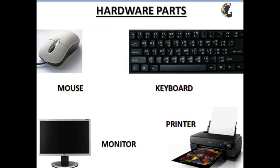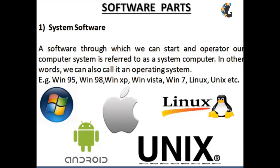Software parts. System software: a software through which we can start and operate our computer system is referred to as system software. In other words, we can also call it an operating software.